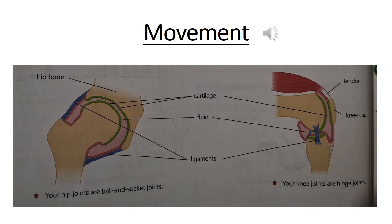Movement: what are joints? Joints are where two bones meet. They make the skeleton flexible; without them, movement would be impossible. Joints allow our bodies to move in many ways. Some joints open and close like a hinge, such as knees and elbows, whereas others allow for more complicated movements, as in shoulder or hip joints.